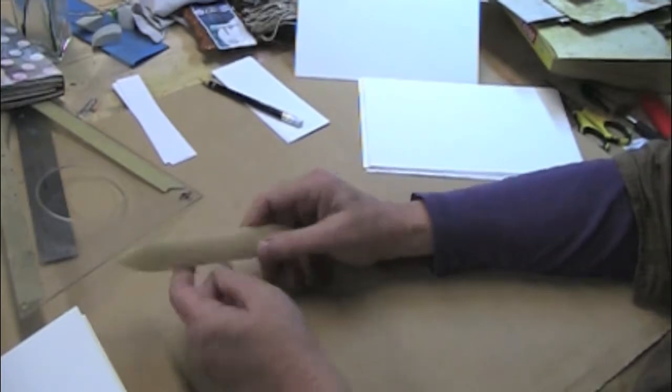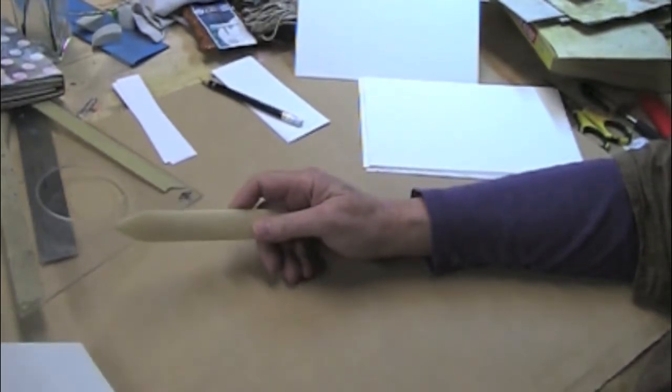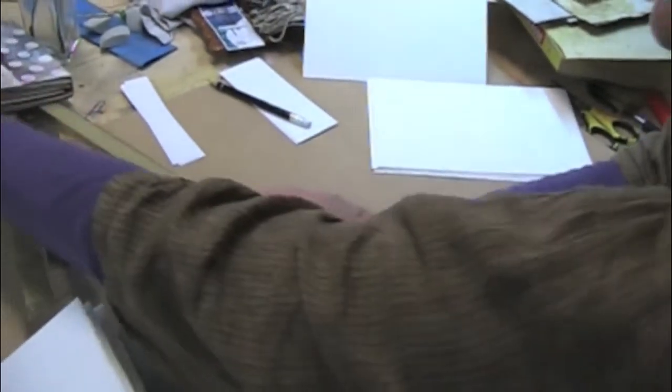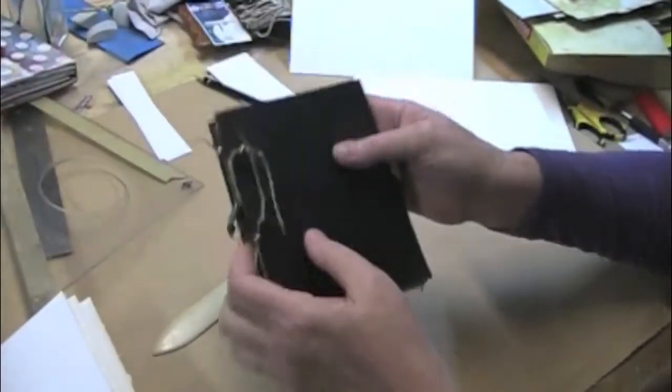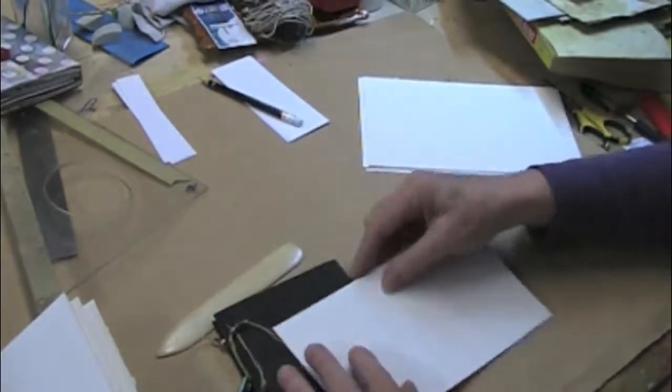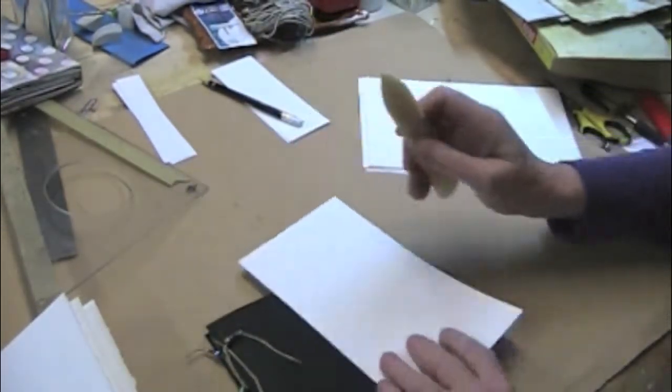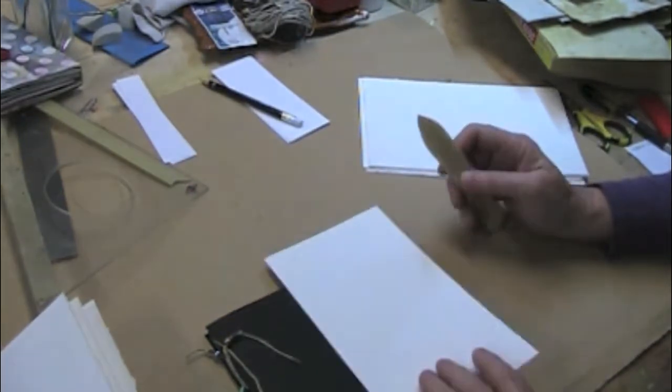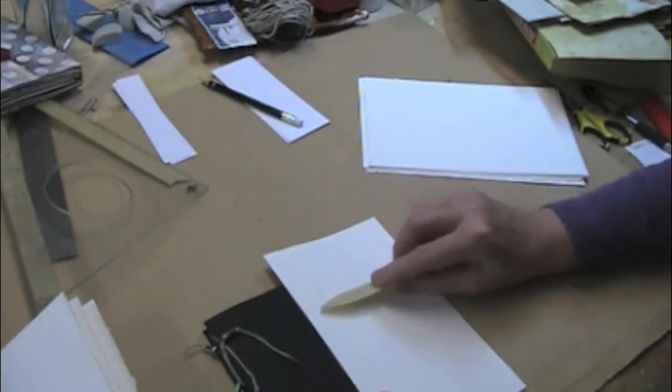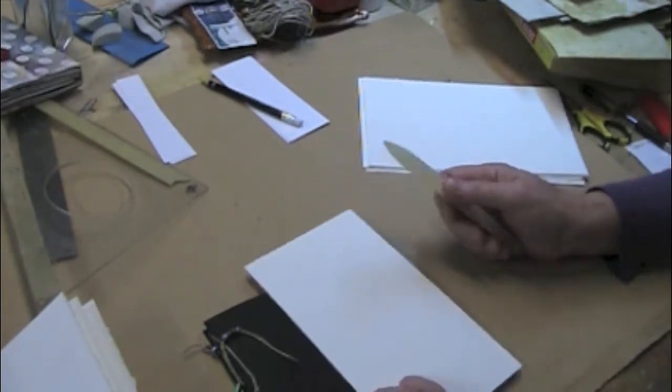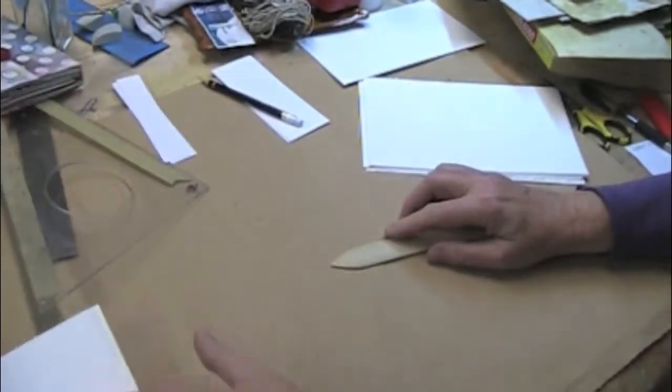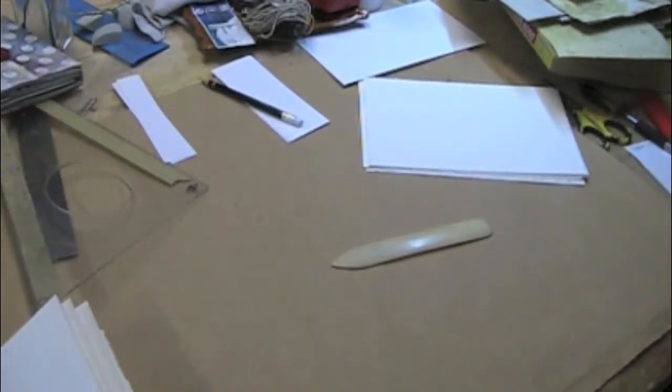If you're using black paper, such as in this book, you'd want to protect the paper when you're doing the folding by laying another piece of paper on top of it, and then bone folding it well. I'm going to finish folding my signatures.